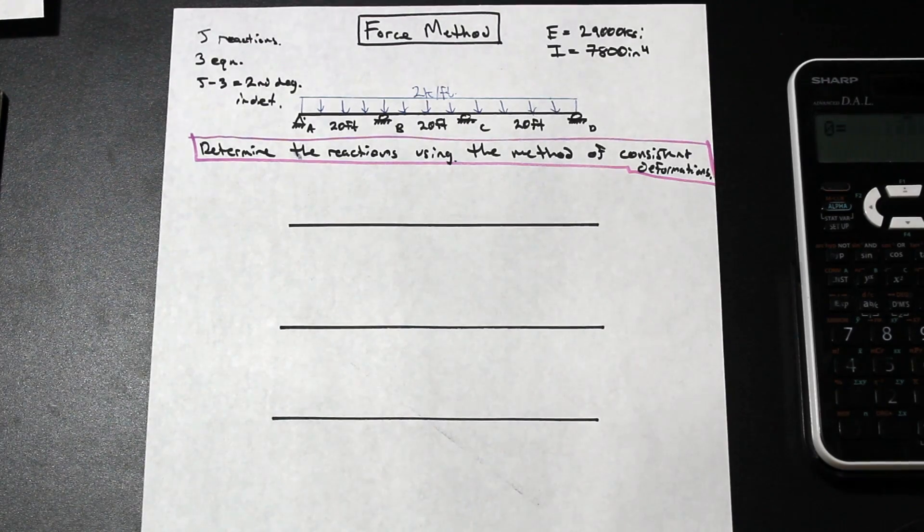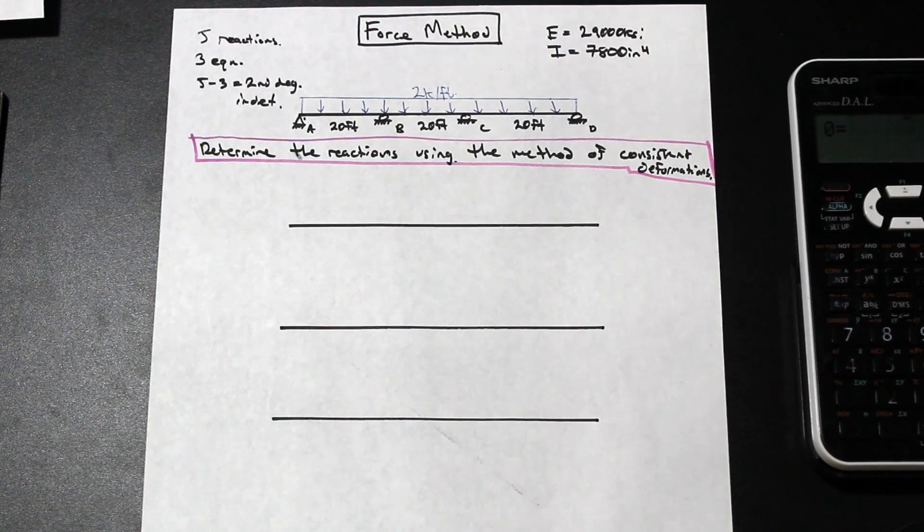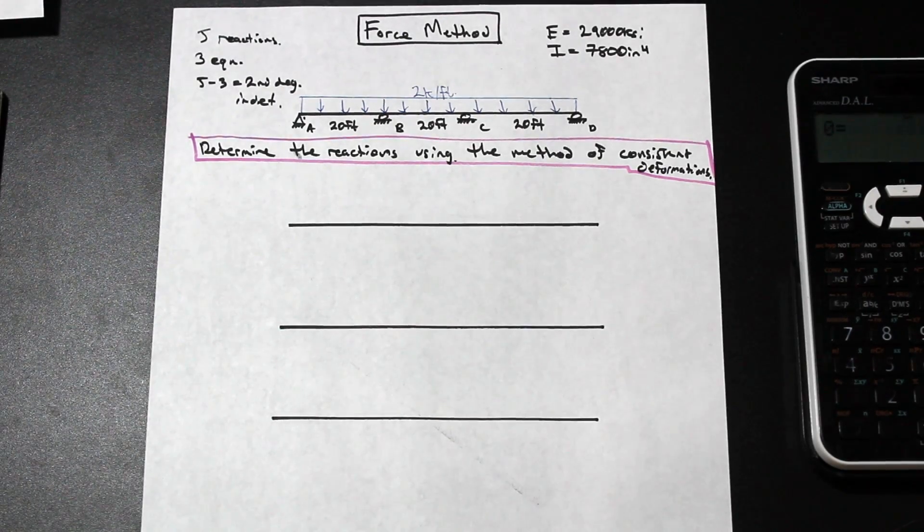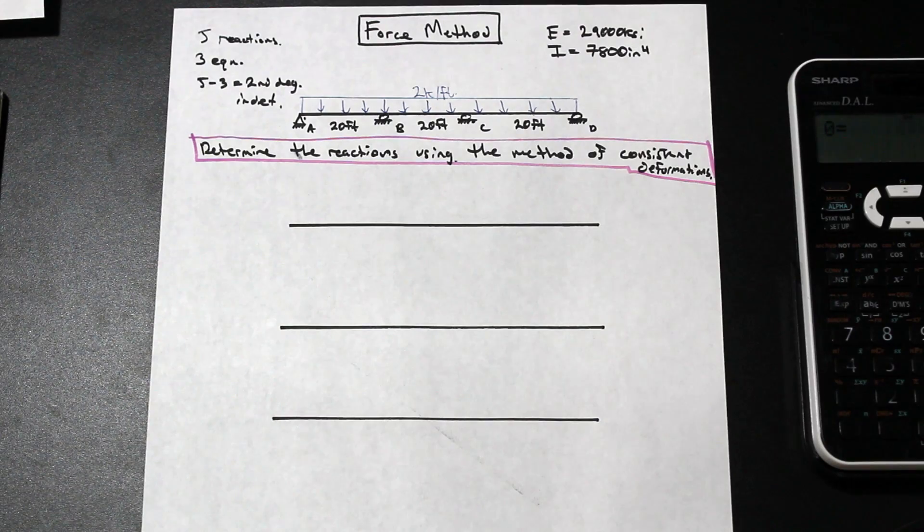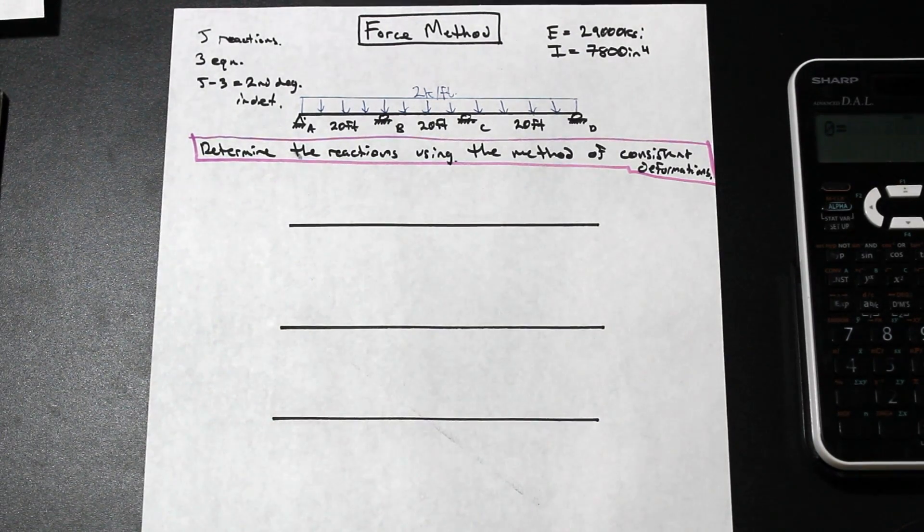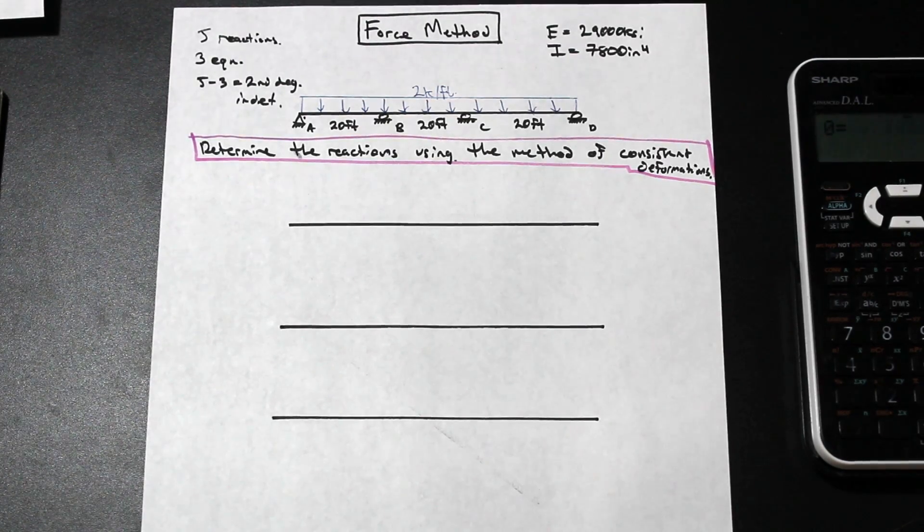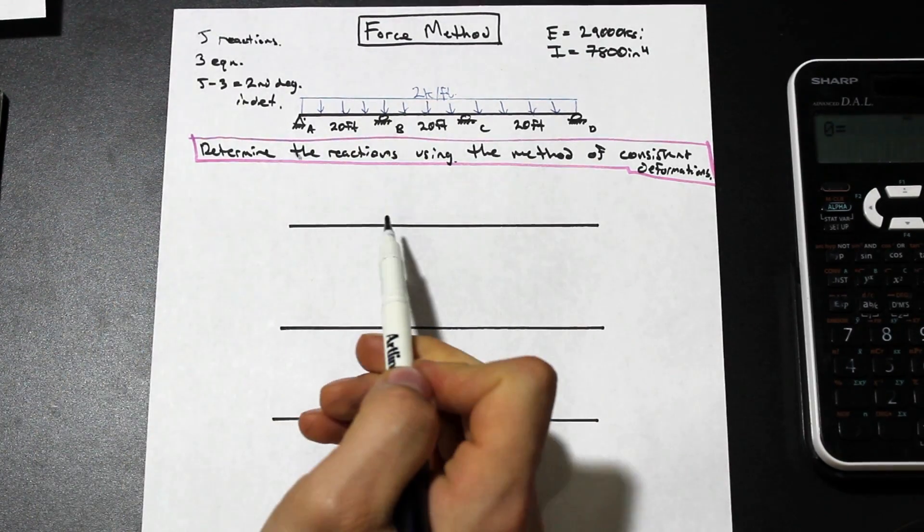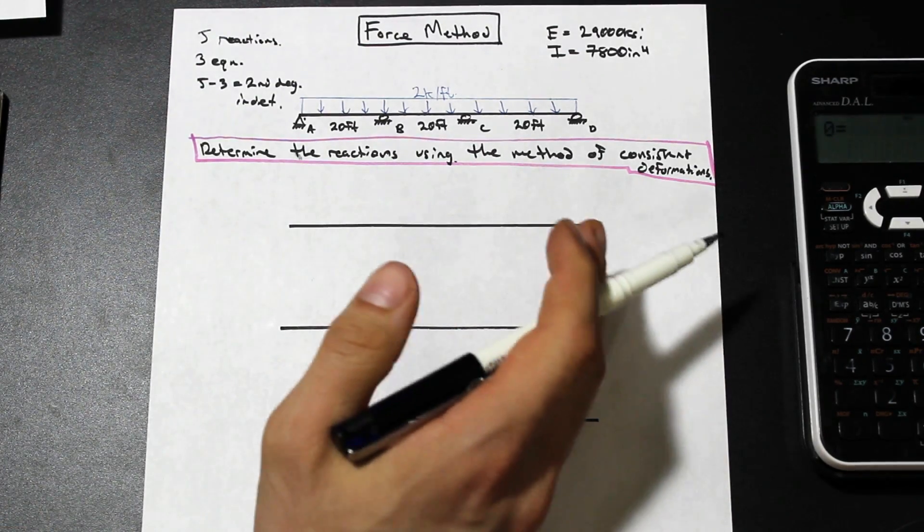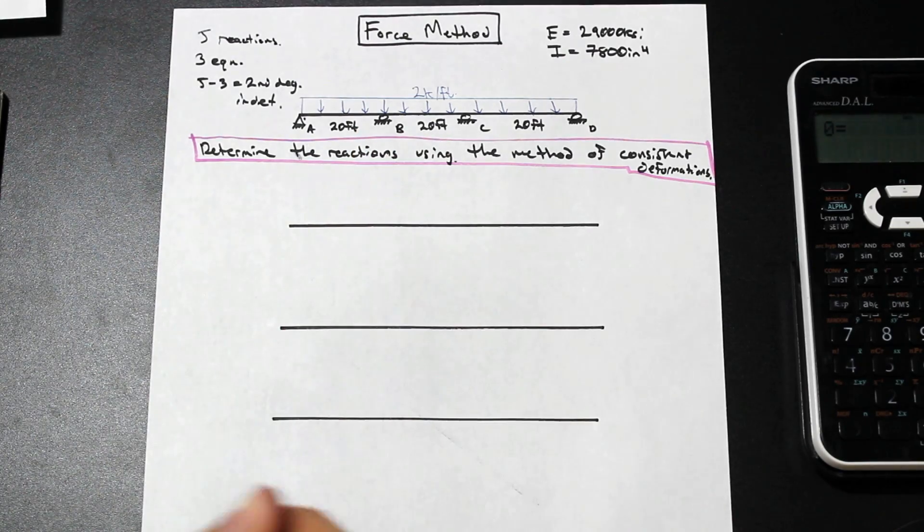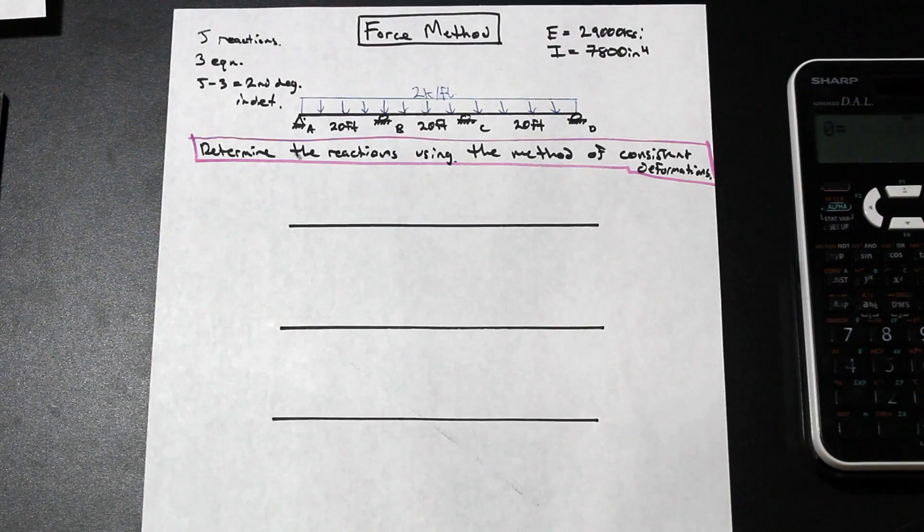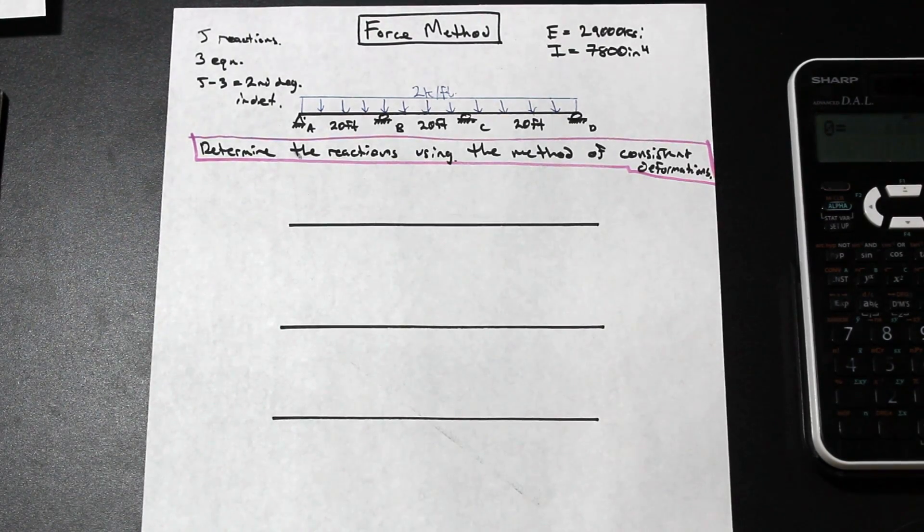So before when we did a first degree indeterminate problem, you just remove one support and come up with another equation. But now we're going to need two extra equations. So what that means is we're going to have to remove two redundant supports and come up with two separate equations. So the first step is the same as the other force method questions. We would remove the redundant forces and just keep the real loadings. I'm going to show you how to split up the beam and then I'm going to show you how to get the equations that you need to solve.